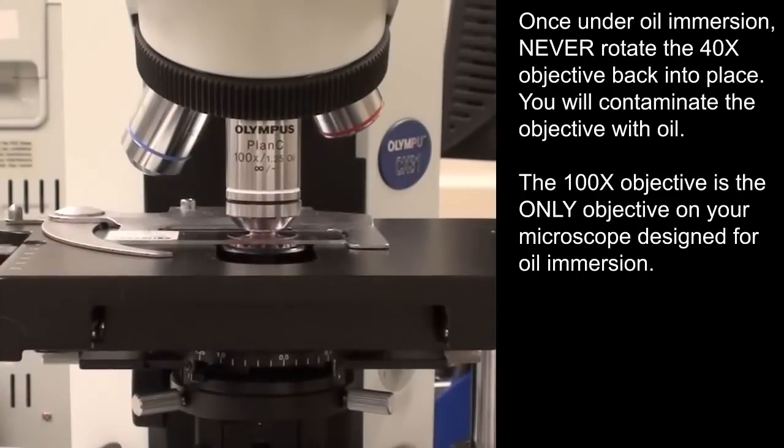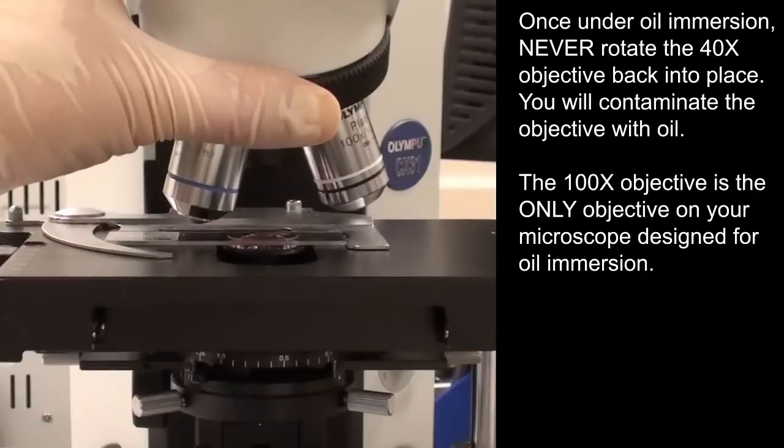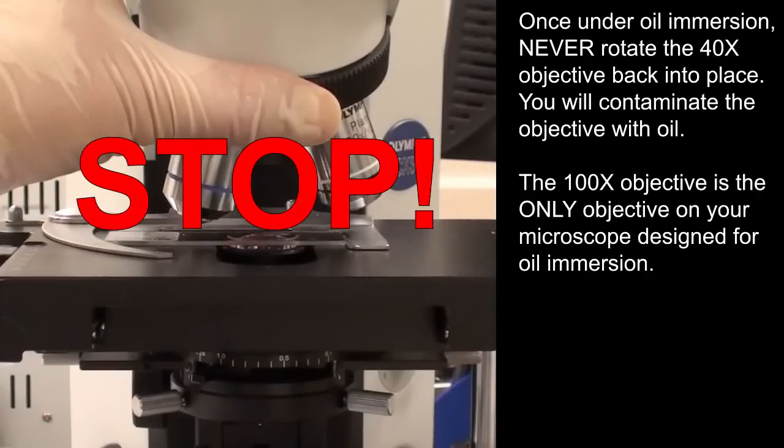Once under oil immersion, never rotate the 40x objective back into place. You will contaminate the 40x objective with oil. The 100x objective is the only objective on your microscope designed for oil immersion.